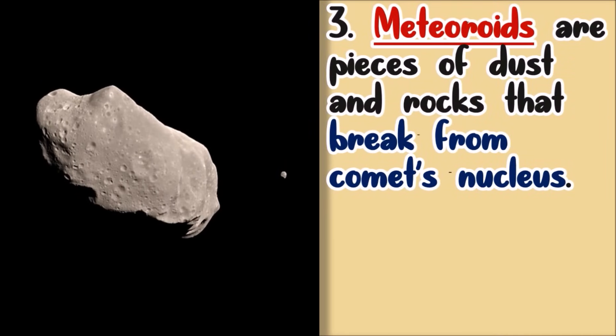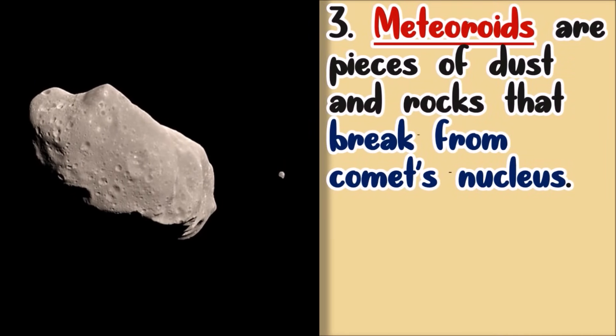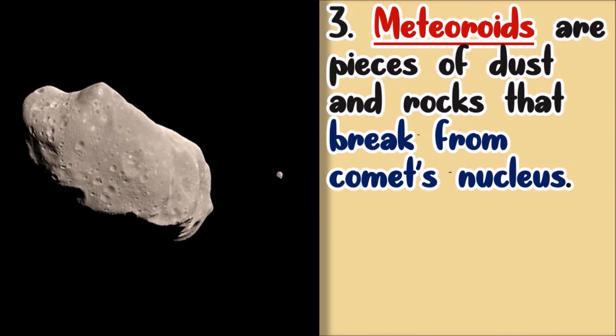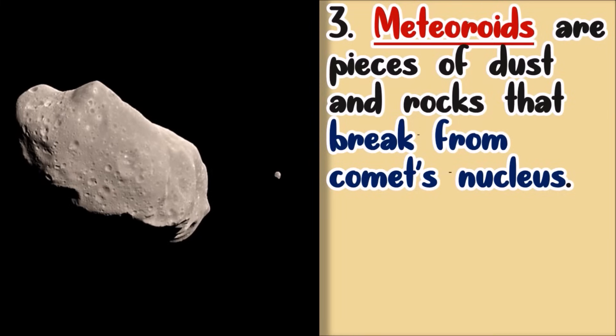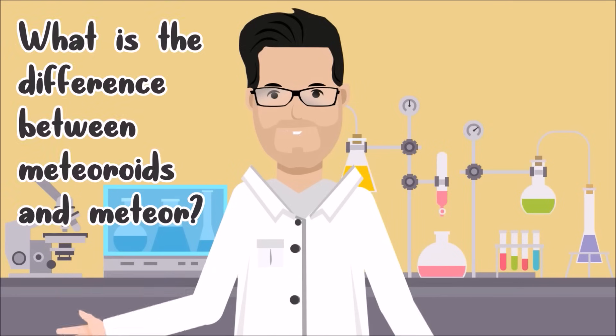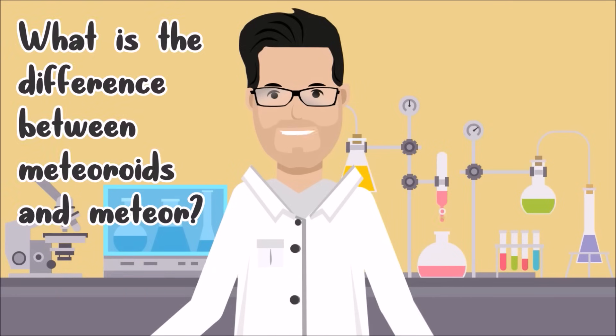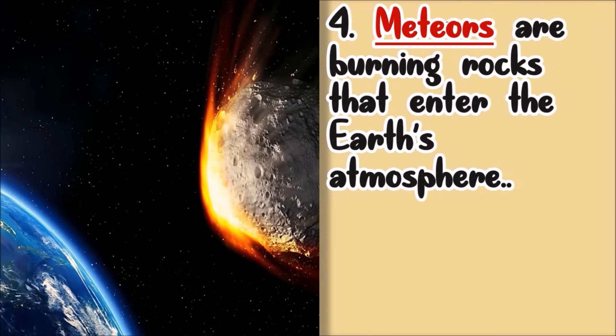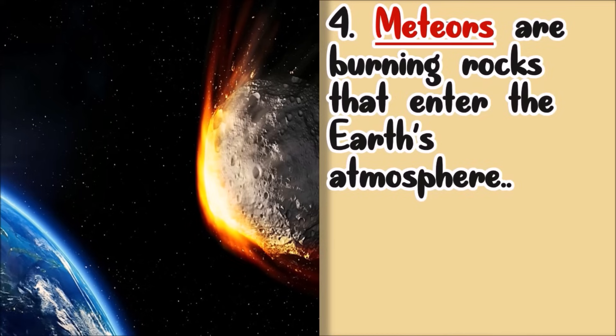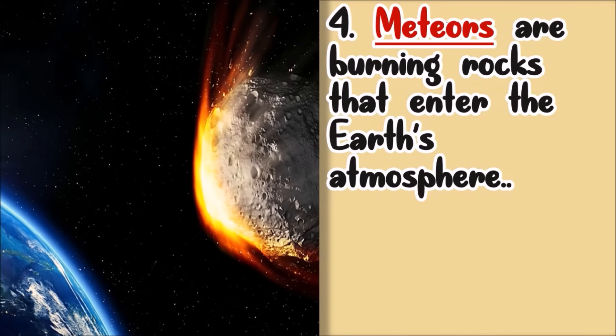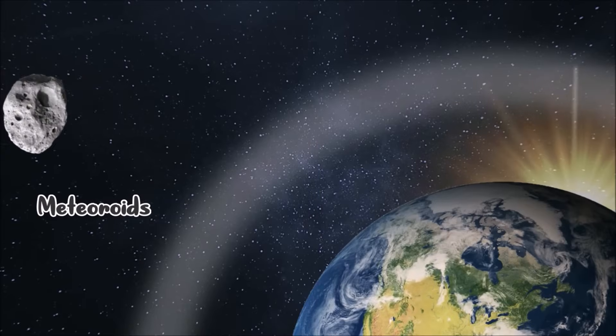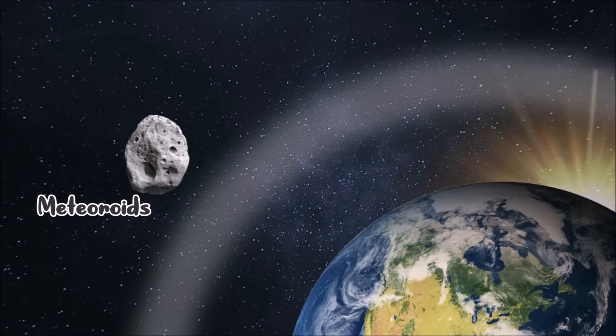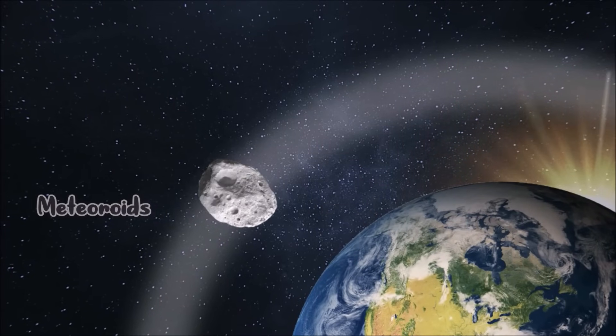Meteoroids. These are pieces of dust and rocks that break from comets' nucleus. What do you think is the difference between meteoroids and meteor? A meteor is burning rocks that enter the Earth's atmosphere. If a meteoroid enters the Earth's atmosphere, you can now call it a meteor.